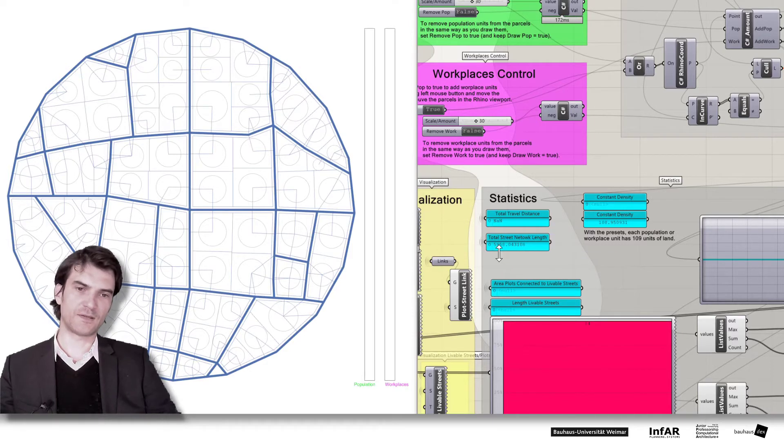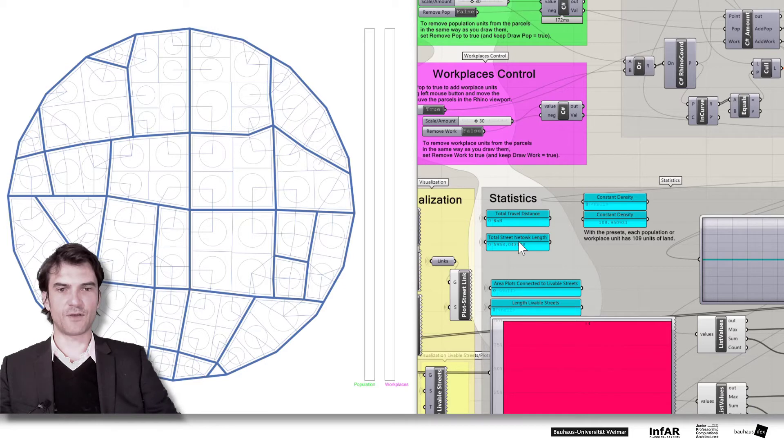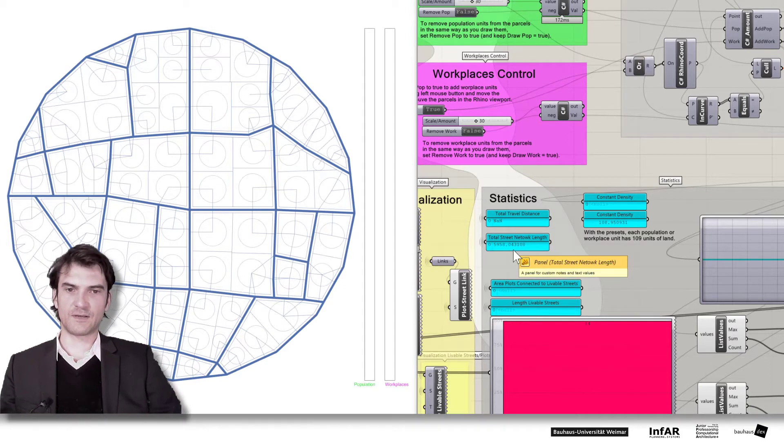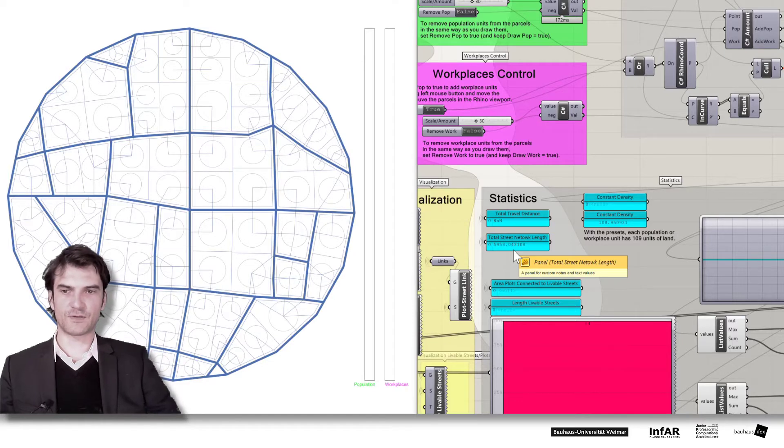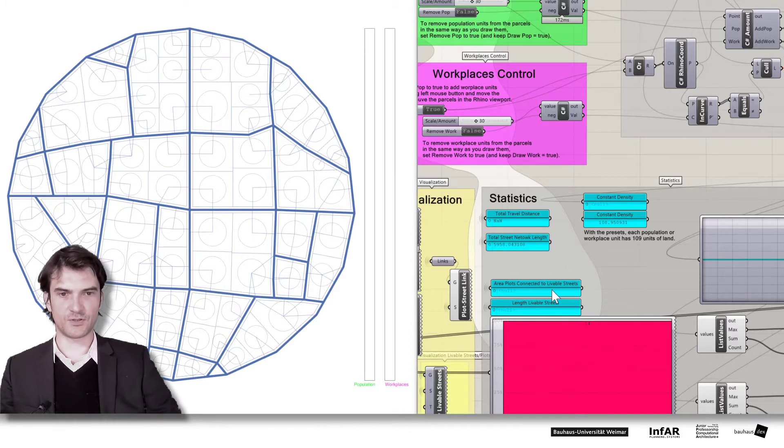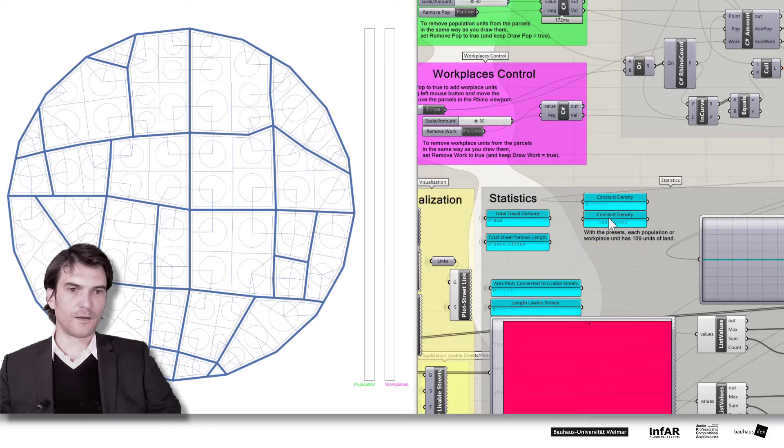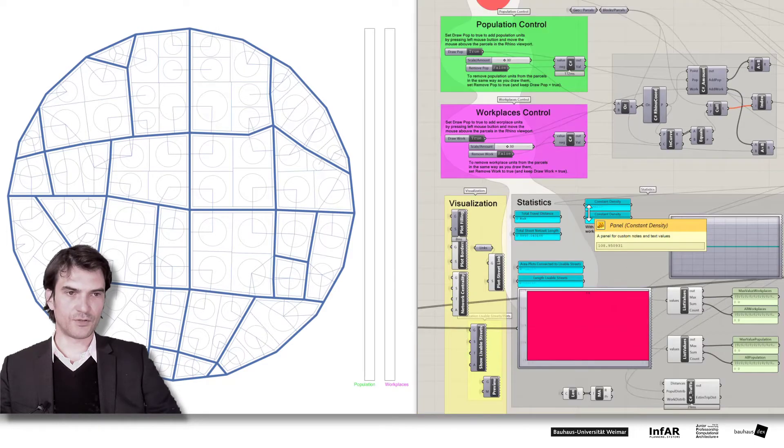But the less streets you have the longer the distances will become. So these criteria usually contradict each other. But you will realize this in the later process of the course when you really try to apply this model. For now I just wanted to mention it. And these aspects I will show you later the areas and the length of the active streets. And these are constant aspects. I will look into them later.